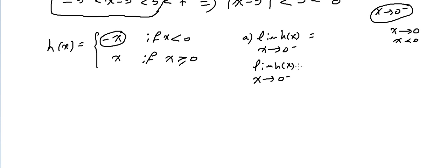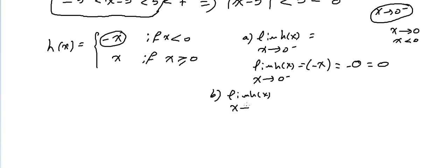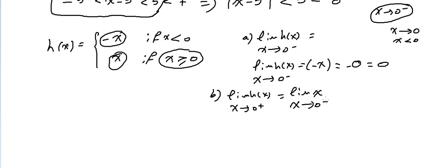The limit of H(X) as X approaches zero minus: we substitute zero, and the answer is zero. For Part B, the limit of H(X) as X approaches zero plus means X is greater than zero, so we use H(X) = X. The limit as X approaches zero plus is also equal to zero.